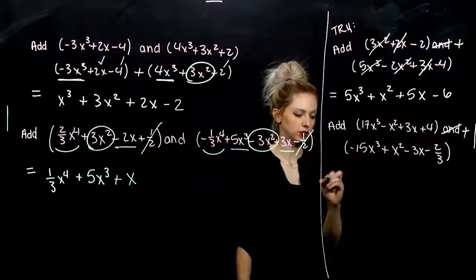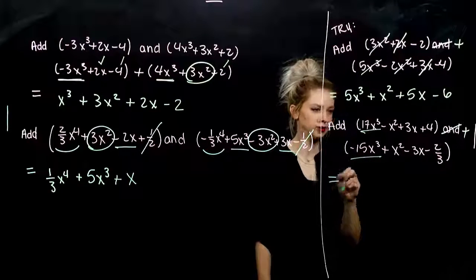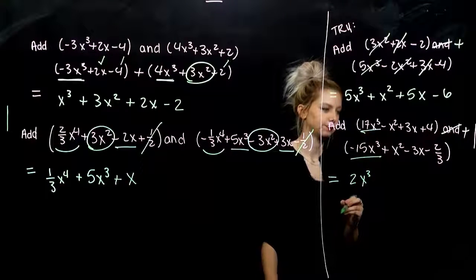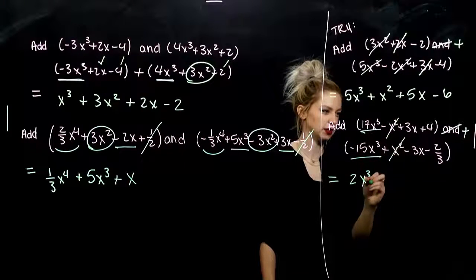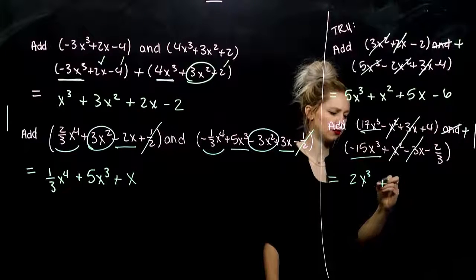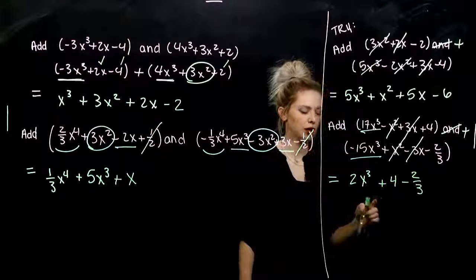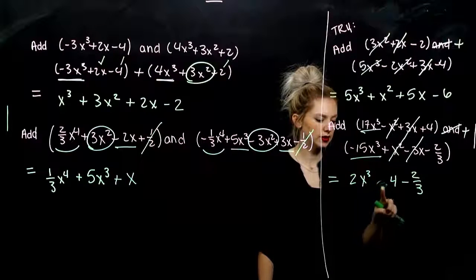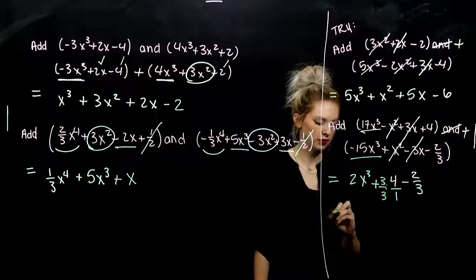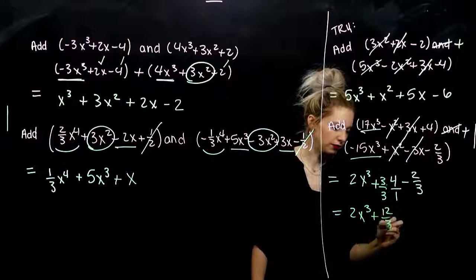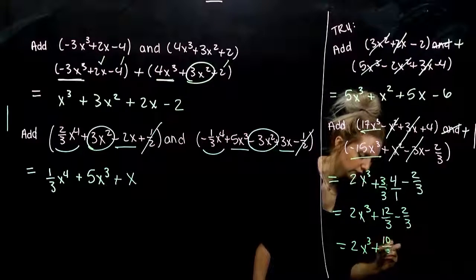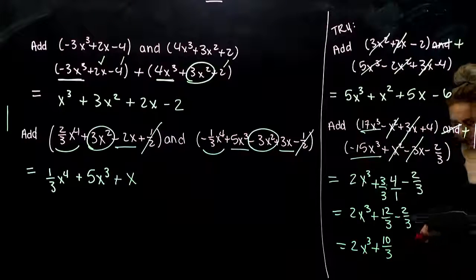And for this last addition problem. Highest power is cubed: if I have 17 and I'm taking away 15, I'm left with 2x cubed. Next, x squared — a negative and a positive, they cancel. The x terms also cancel. So I'm combining 4 and negative 2 thirds, but I need common denominators. Multiplying 4 by 3 over 3 gives 12 thirds, so 12 thirds minus 2 thirds is 10 thirds. Answer: 2x cubed plus 10 thirds. Those aren't like terms, so we're done.